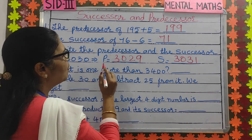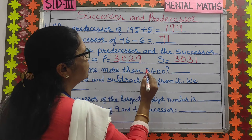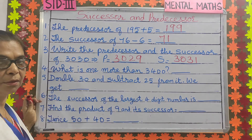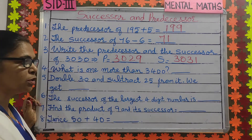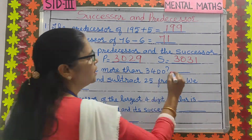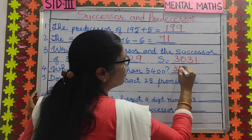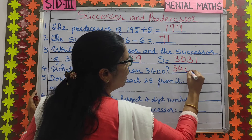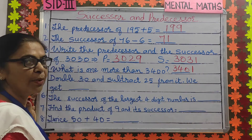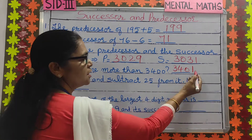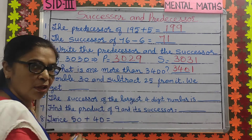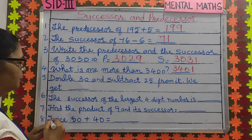Number 4: what is 1 more than 3400? 3400 plus 1 is 3401. This is the number just after 3400, or the successor of 3400.